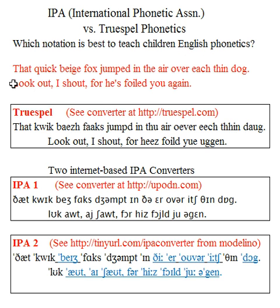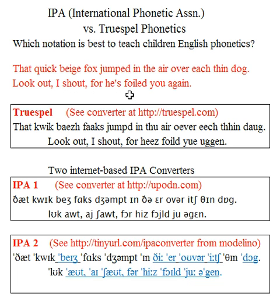Here is a sentence or short story with all sounds of US English in it: 'That quick beige fox jumped in the air over each thin dog. Look out, I shout, for he's foiled you again.'